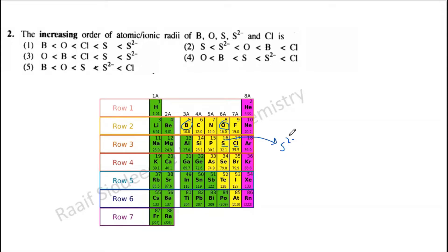When there is an ion, it shows more electron shielding, which reduces the effective nuclear charge. Due to excess electrons, the ionic radius increases. Going from row 2 to row 3, those elements should have a higher radius. Within boron and oxygen, going across the period, the radius decreases because of higher effective nuclear charge.